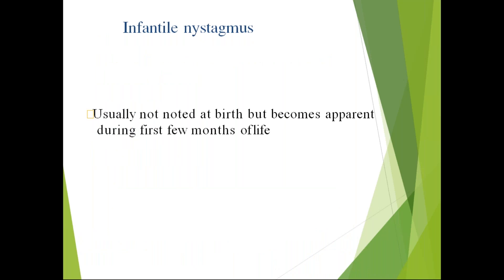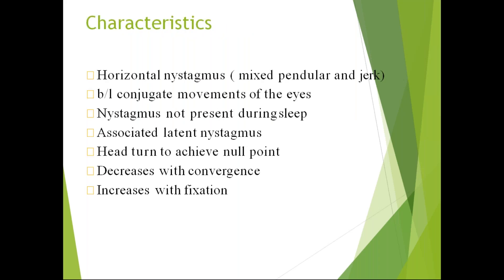Infantile nystagmus is usually not noted at birth but becomes apparent in the first few months of life. Its characteristics: it is always horizontal, can be a mixture of pendular and jerk nystagmus, is usually bilateral and conjugate, is not present during sleep, involves head turns to achieve the null point, and decreases with convergence but increases with attempted fixation.